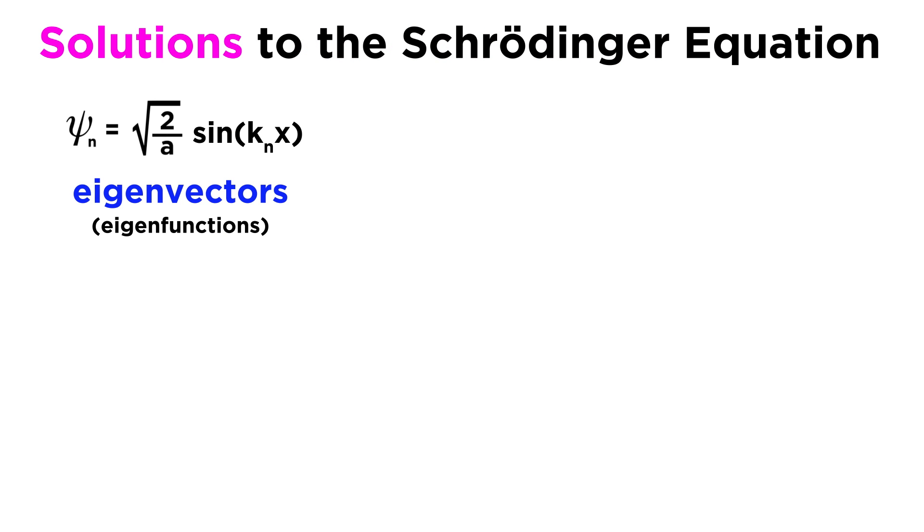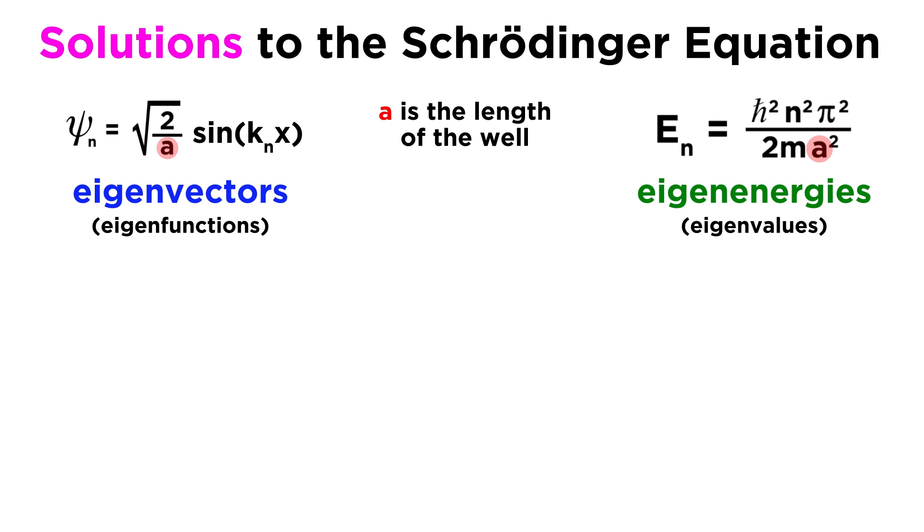As we learned, the solution to this problem takes the form of a set of eigenfunctions, represented by psi sub n, and their corresponding energies, E sub n, which both depend on the length of the well, represented by a, and where k sub n equals n pi over a, where n is the set of positive integers.